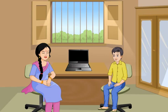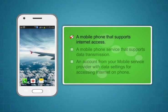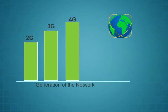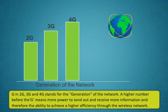To access the internet on your mobile phone, you need these things: a mobile phone that supports internet access, a mobile phone service that supports data transmission, and an account from your mobile service provider with data settings for accessing internet on phone. Using internet by 2G, 3G and 4G network — the G in 2G, 3G and 4G stands for the generation of the network. A higher number before the G means more power to send out and receive more information and therefore the ability to achieve higher efficiency through the wireless network.